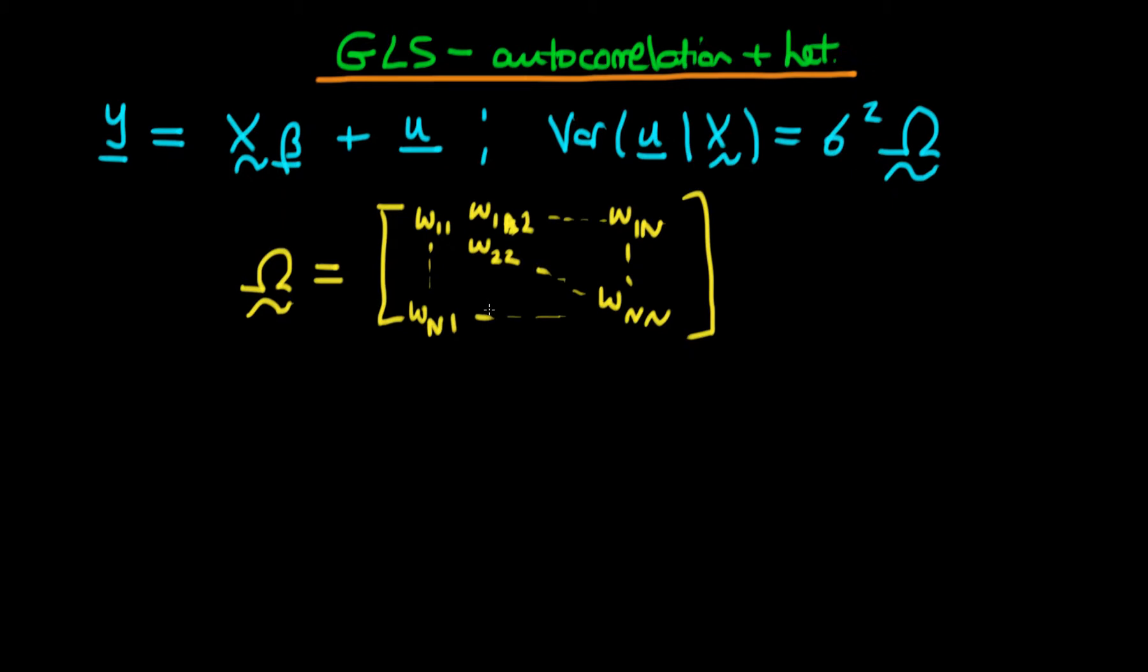But the main message here is that omega isn't a diagonal matrix. So that means that we both have heteroscedasticity because I haven't necessarily assumed that the diagonal components are actually the same as one another. I've got omega 1 1, omega 2 2, and I haven't assumed that omega 1 1 is equal to omega 2 2 is equal to omega n n.